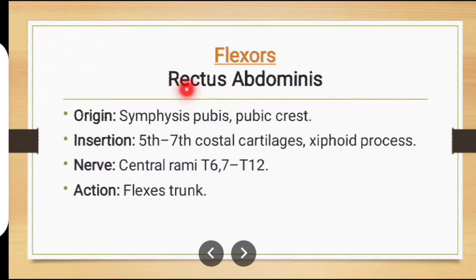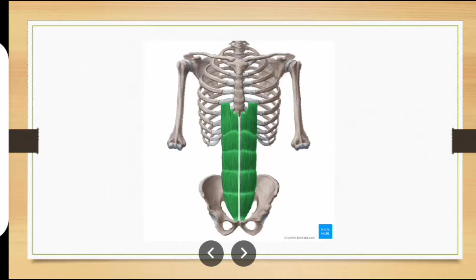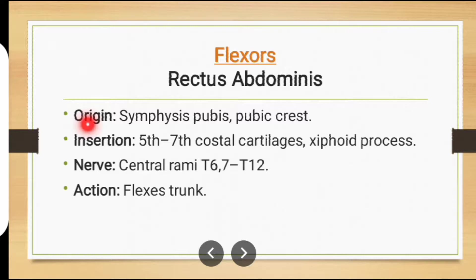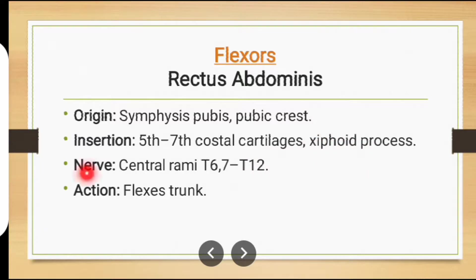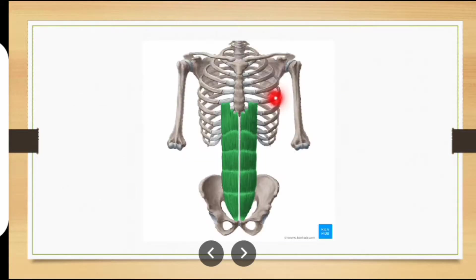First of all we will discuss about those muscles that are involved in trunk flexion. The first muscle is rectus abdominus muscle. The muscle in green is rectus abdominus muscle. Its origin is from symphysis pubis and pubic crest. Insertion on 5th to 7th costal cartilages and xiphoid process. Nerve supply: ventral rami T6, T7 to T12. Action: trunk flexion.